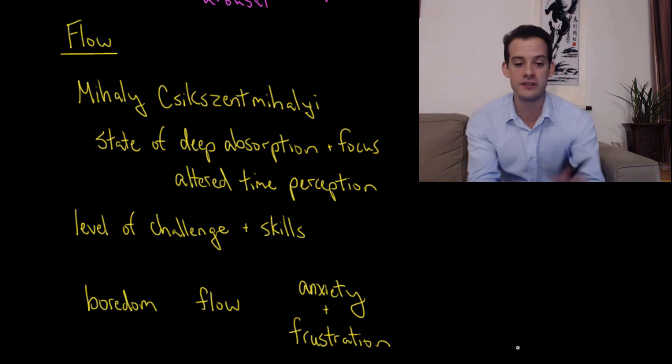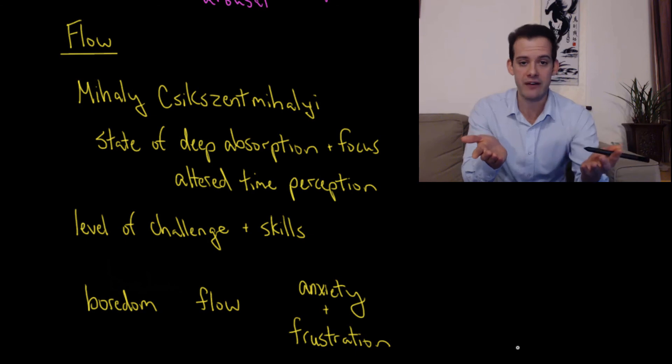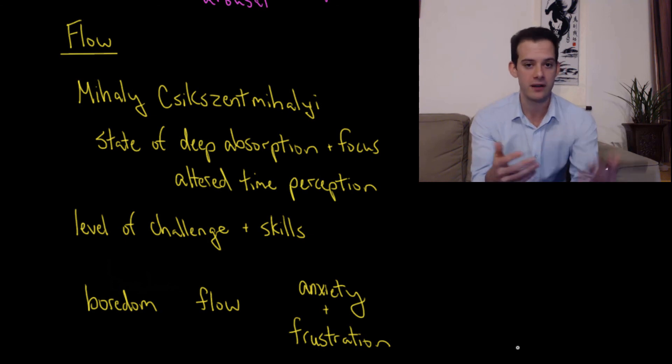But somewhere in the middle, we find a way to get this perfect balance between the level of challenge of the task and our particular skills for performing that task. And when that occurs, we experience this flow state. It's this enjoyable experience of losing track of time, becoming completely absorbed in the task that we're doing. Csikszentmihalyi proposes that we should be trying to find flow as much as we can in our lives, trying to balance challenge and skill in the optimal way.